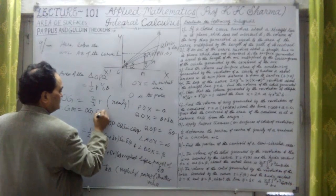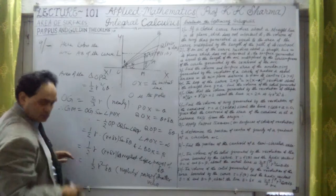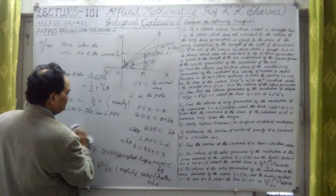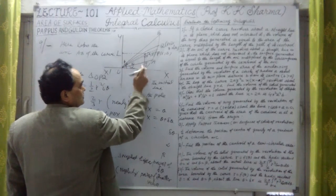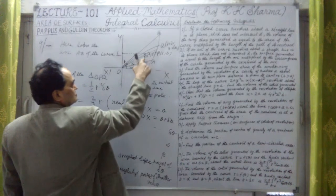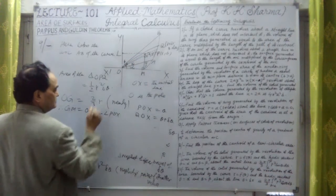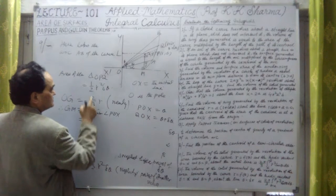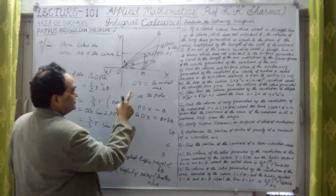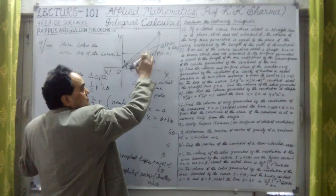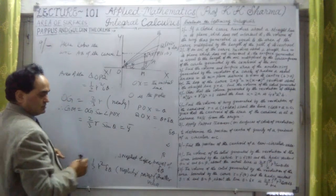GM = OG × sin(angle POX) = OG × sin(θ). Since OG = (2/3)r, we get GM = (2/3)r × sin(θ). This GM is the perpendicular distance from the centroid to the line OX, which is y-bar. So y-bar = (2/3)r sin(θ). This is the length of the centroid from the line OX.